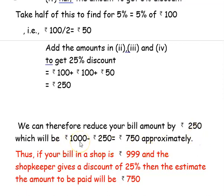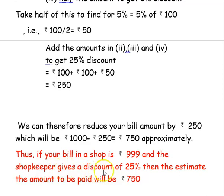The approximated bill amount is rupees 1000, so rupees 1000 minus rupees 250 gives rupees 750 approximately. Thus, if your bill is rupees 999 and the shopkeeper gives a discount of 25 percent, the estimated amount to be paid is rupees 750.